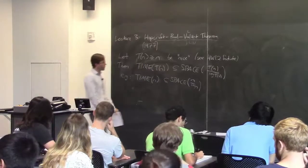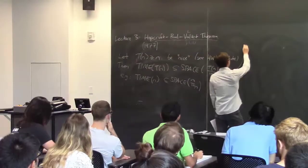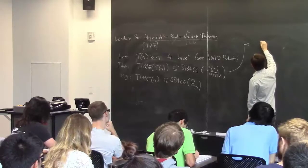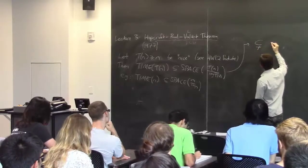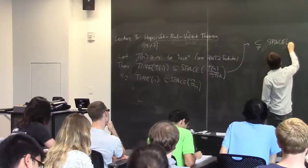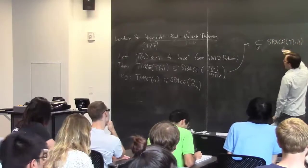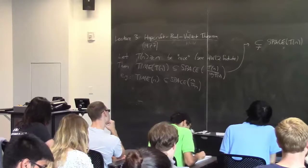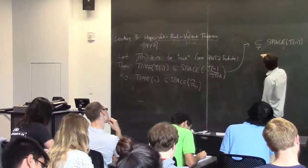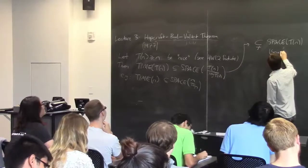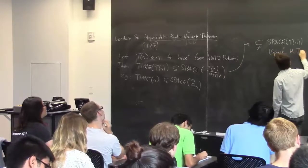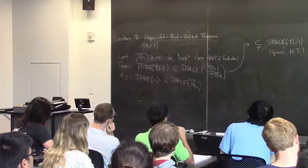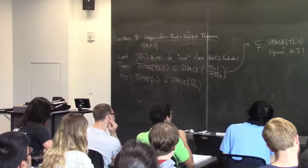Another reason why this is cool is that the class SPACE(t(n) / log t(n)) is strictly contained in SPACE(t(n)) — again, assuming t(n) is space constructible or something, because t(n) is noticeably bigger than log t(n). So by the space hierarchy theorem, TIME(t(n)) is strictly contained in SPACE(t(n)): space is strictly more valuable than time, which is pretty cool.